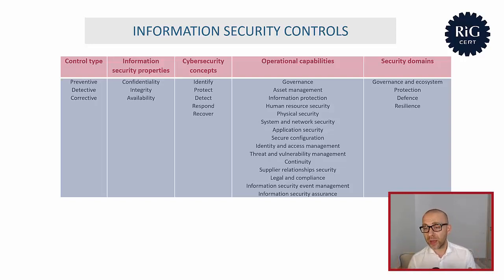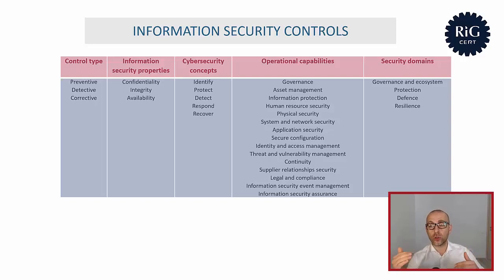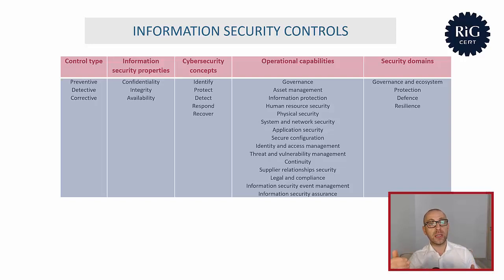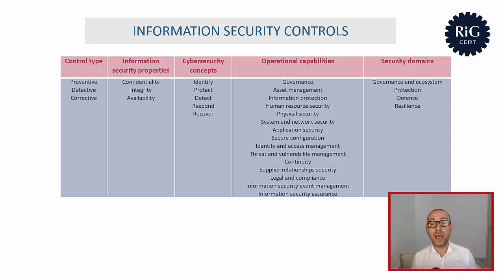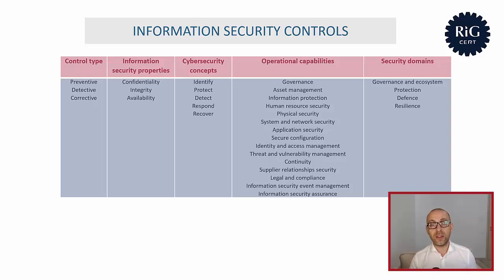The last category of attributes is security domains, which categorize controls from the perspective of information security fields, expertise, services, and products. The attributes here are governance and ecosystem, protection, defense, and resilience.